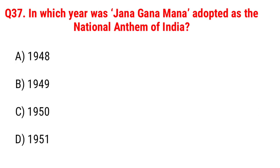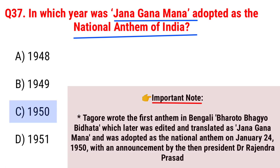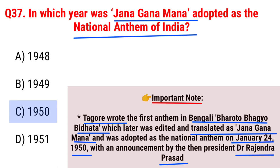Next question: in which year was Jana Gana Mana adopted as the national anthem of India? Option A, 1948; B, 1949; C, 1950; D, 1951. The right answer is Option C, 1950. Important note: Tagore wrote the first anthem in Bengali, Bharata Bhagyavidhata, which was later edited and translated as Jana Gana Mana, and was adopted as the national anthem on January 24, 1950, with an announcement by the then-President Dr. Rajendra Prasad.